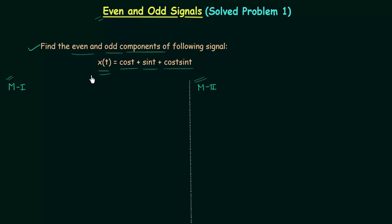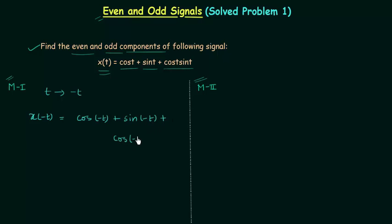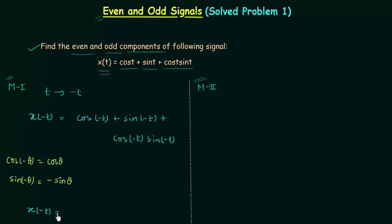Let's begin with method 1. Signal x(t) = cos(t) + sin(t) + cos(t)sin(t). We will perform the folding — in folding, time t is replaced by minus t. So x(-t) = cos(-t) + sin(-t) + cos(-t)sin(-t). We know that cos(-θ) = cos(θ) and sin(-θ) = -sin(θ). Therefore, x(-t) = cos(t) - sin(t) - cos(t)sin(t).